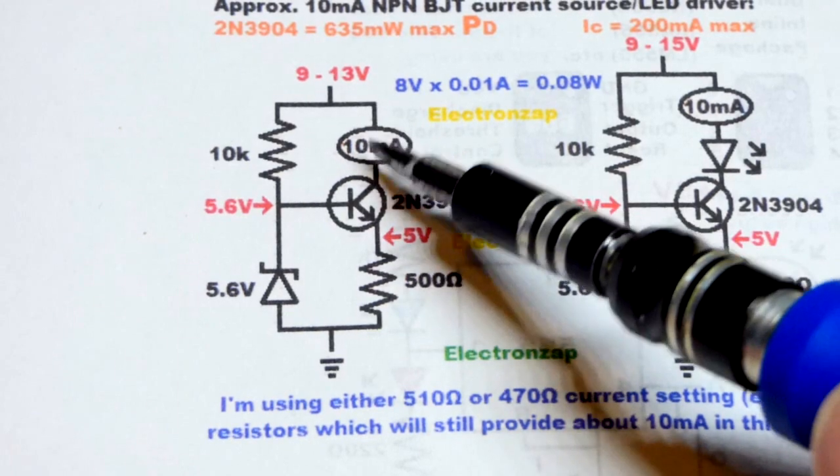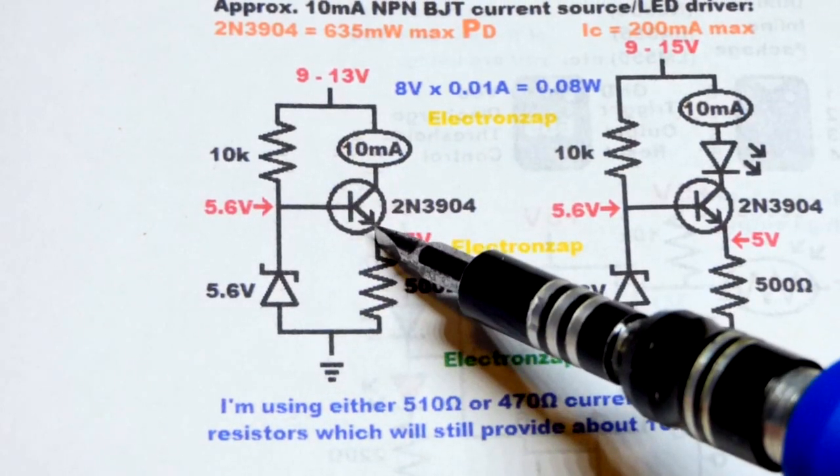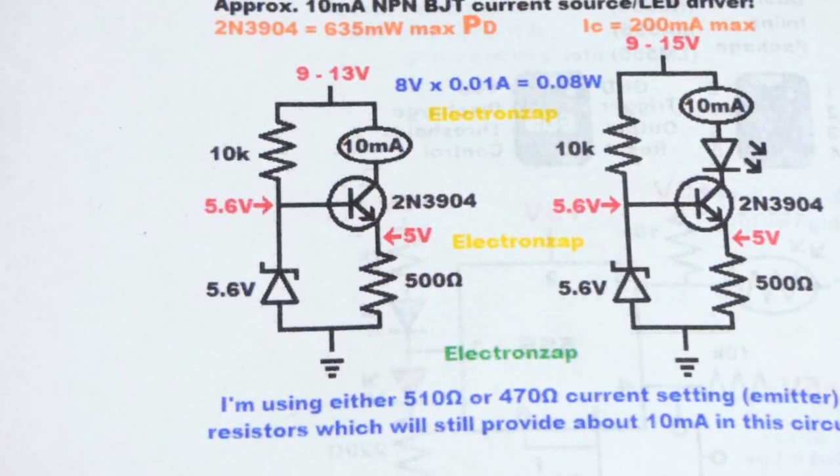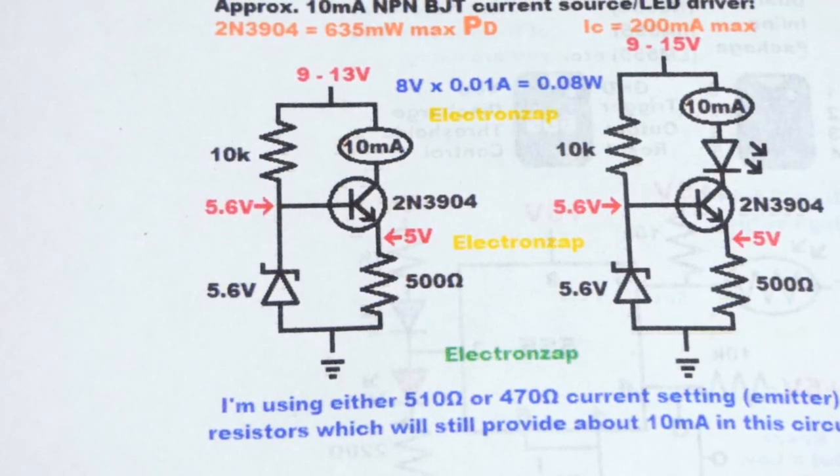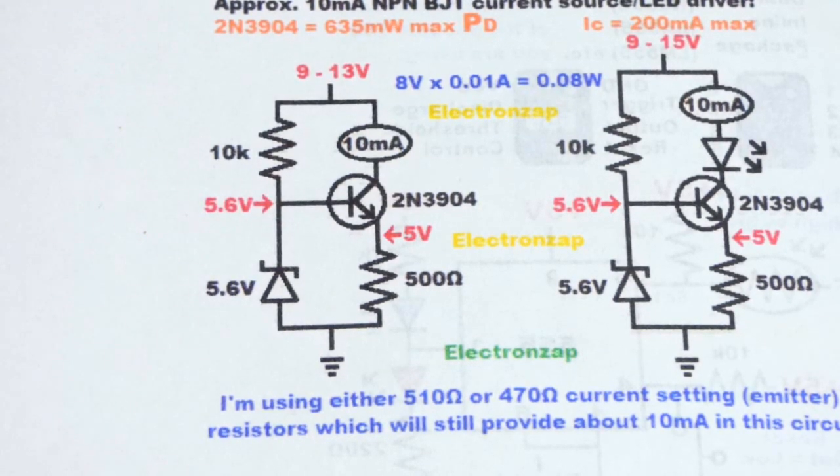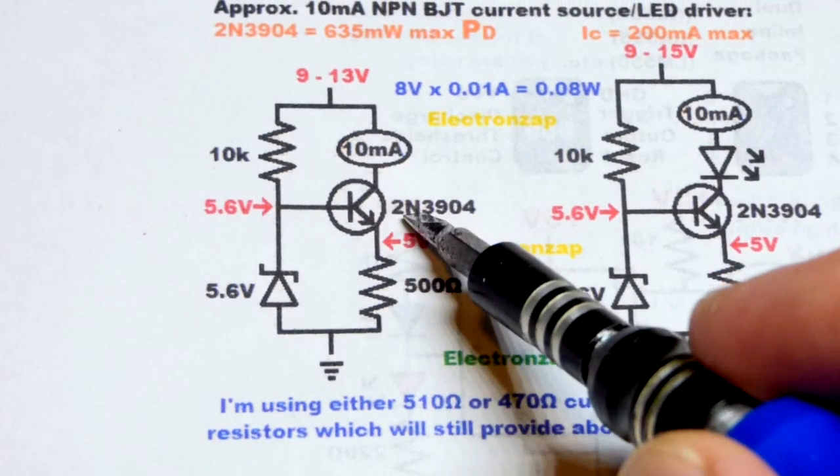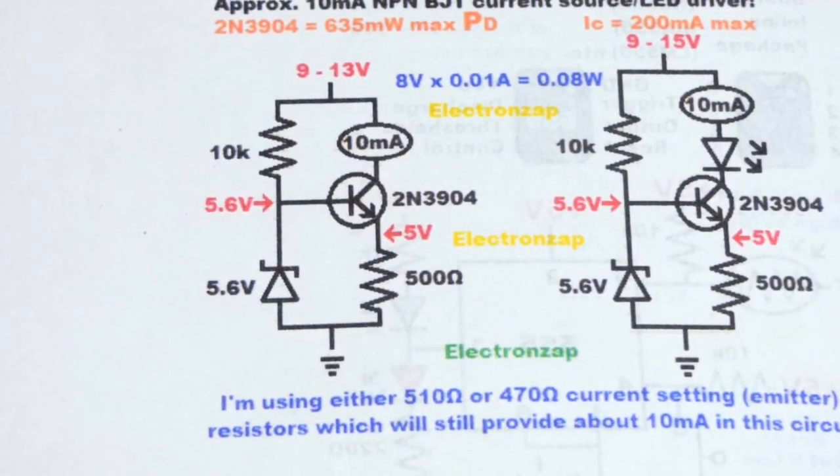So that's about it. Collector, base, emitter. As a review, I'm using 2N3904. Any other NPN bipolar junction transistor should work just fine, but 2N3904 is pretty common. Other transistors may have a different pin layout, but if it starts with 2N and it's a bipolar junction transistor, it probably has this pin layout.